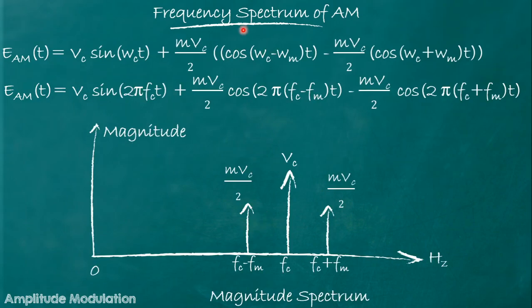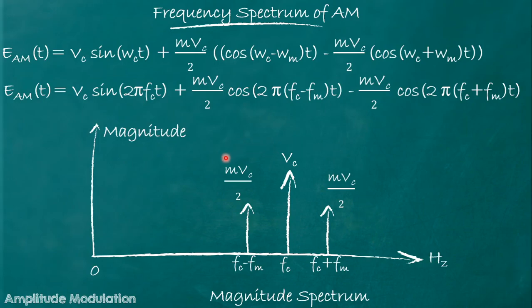The same AM equation can be represented using 2πf instead of ω. So the magnitude spectrum x-axis becomes in hertz, and the three frequencies become fc−fm, fc, and fc+fm, while the amplitudes remain the same. This is the magnitude spectrum with the x-axis in hertz instead of radians per second.